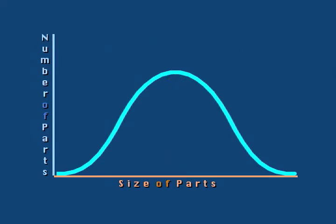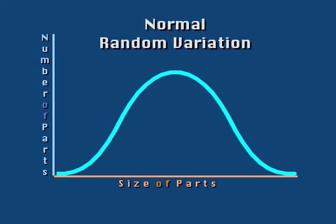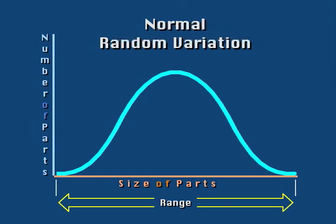The second characteristic is the width of the curve, which reflects the random variation of the process. The dimensions were not all the same. Some were larger and some were smaller than the nominal dimensions specified in the print. The width of the curve at the bottom tells us the range of variation, how much larger or smaller those dimensions were.